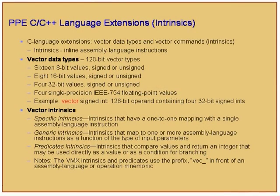The PPE has its own C++ language extensions and vector data types. Even on the PPE, the vector data type is 128 bits, 16 bytes. It can hold 16 8-bit values (signed or unsigned), 8 16-bit values, 4 32-bit values, and 4 single-precision IEEE floating-point values. There are three categories of intrinsics: specific instructions have a one-to-one mapping with a single assembly language instruction; generic can map to one or more; and predicates are conditional instructions that compare two values, generate a mask, and use that mask to detect a condition or branch.